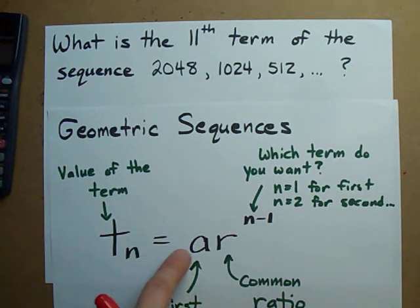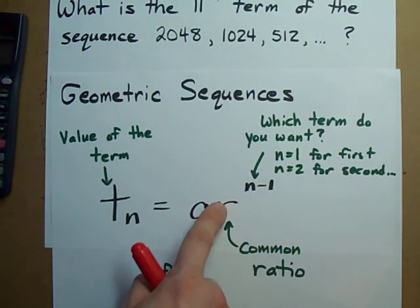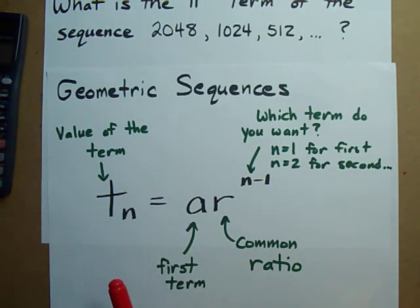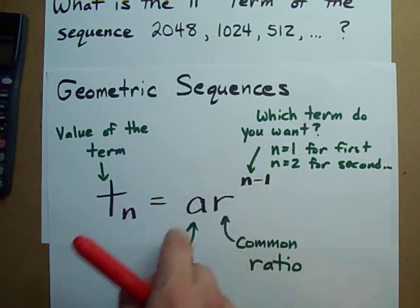The value of the term is the first term, a, times this common ratio, which is how much you're multiplying it by to get to the next one, to the power of whatever term you want minus 1.